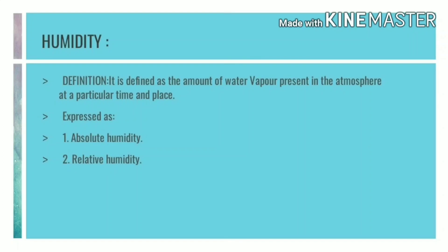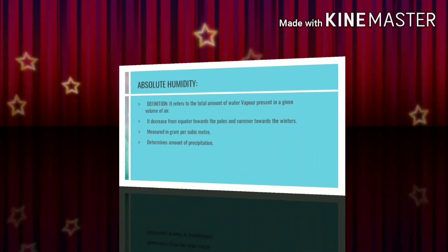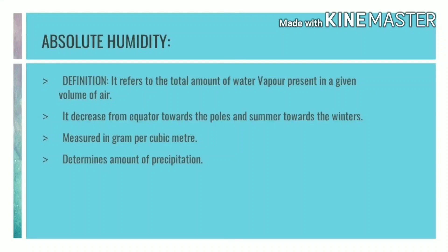Humidity is caused due to evaporation from the land surface and from water bodies on the earth's surface. Humidity can be expressed in two ways: absolute humidity and relative humidity. Absolute humidity refers to the total amount of water vapor present in a given volume of air, for example one cubic meter. The actual amount of moisture differs from place to place — it decreases from the equator towards the poles.